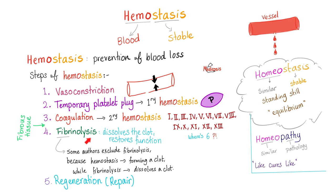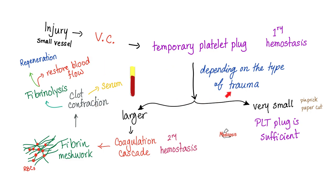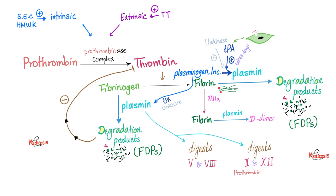How do I bust the clot? Fibrinolysis — TPA, streptokinase, etc. The purpose of the coagulation cascade (secondary hemostasis) is to convert fibrinogen into active fibrin fibers, which trap red blood cells to stop the bleeding. To bust the clot, you need plasmin. Plasmin is active but came from plasminogen, which is not active. How do you convert plasminogen into plasmin? Tissue plasminogen activator — TPA. In strep pyogenes, this TPA has another name: streptokinase.